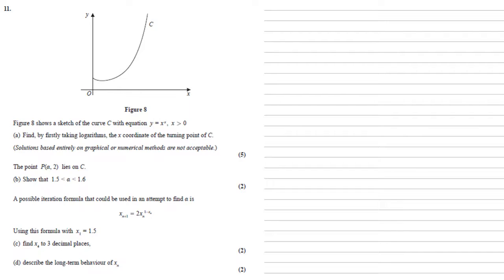The point P, alpha 2, lies on C. We need to show that alpha is in between 1.5 and 1.6. So we've got our y equals x to the power of x. We're going to put in those two bounds and see what y's we get out.